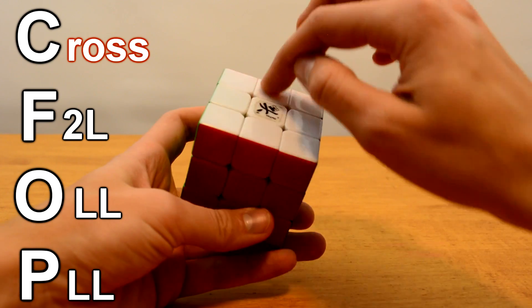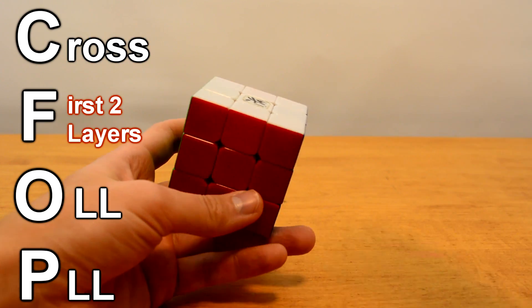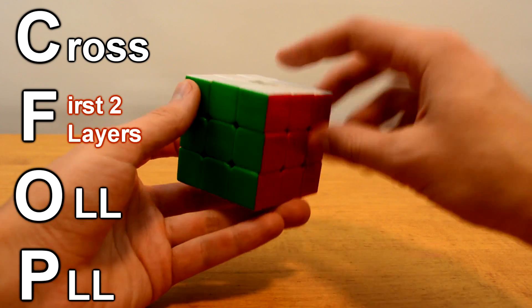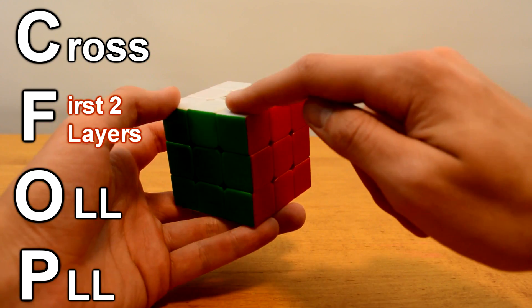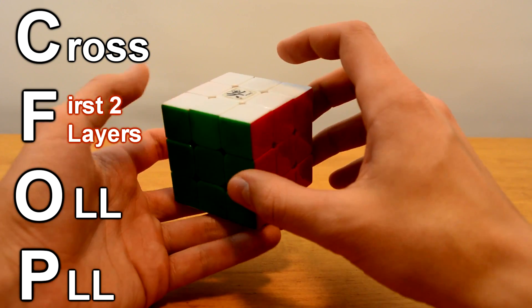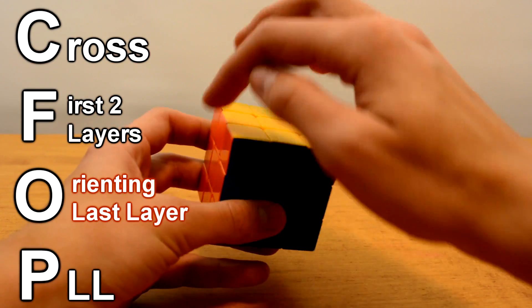The first of which is building the cross, which is what the C stands for. The second is F2L, which is building the first two layers. So instead of inserting the corners, we'll be inserting the corners and the edge pieces in at the same time as we build up our cube.